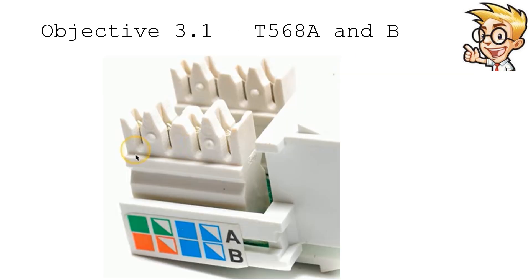Here's another example of a block that has different colors assigned for A and B. On this side of the block we have the four colors used for A, or the four colors used for B. If we turn this block around, we would see those colors associated with four different connectors.